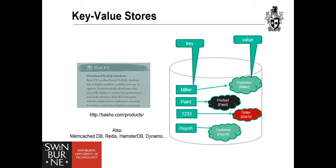Key-value stores use hashing to store an entity as a blob defined by its key. Hashing uses a mathematical function to transform a key into a number used as a memory address. Because this number points directly to the value, hash maps are very quick to search — but only if we search by primary key. Any other part of the entity cannot be used as a search criterion. Some key-value stores have more functionality and let you store objects by type and search by object content. Basic key-value stores put data into buckets regardless of type, unlike document and column family databases.